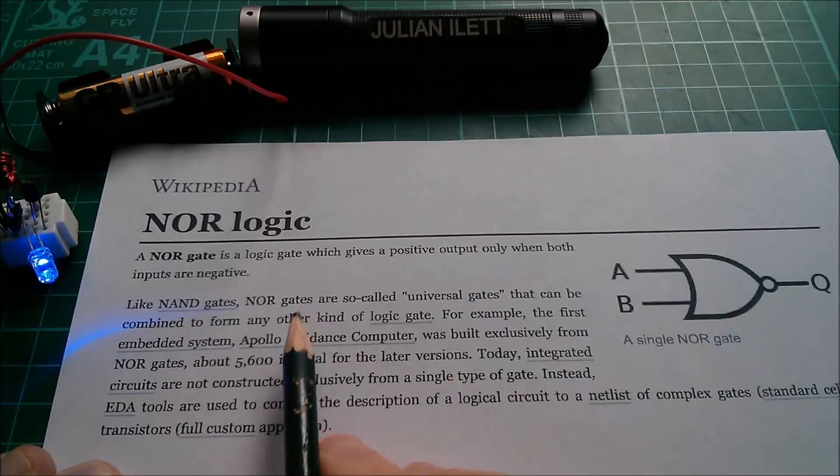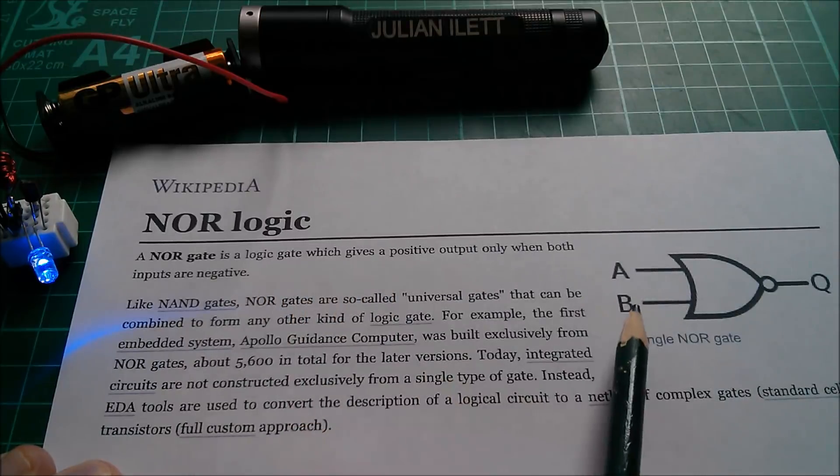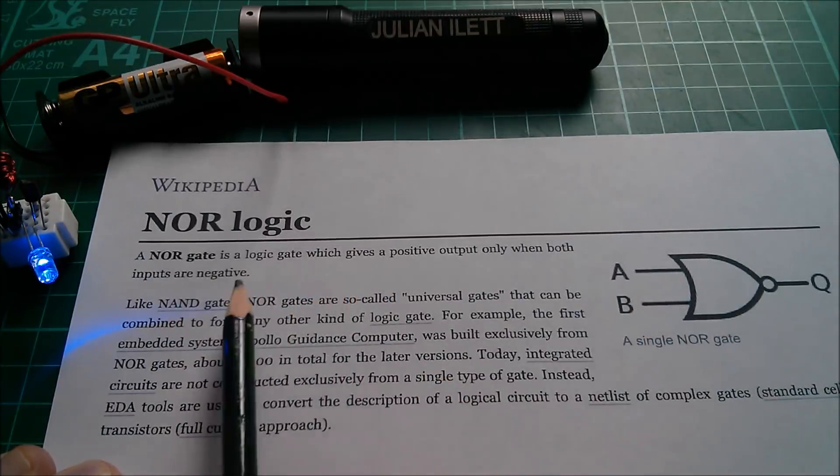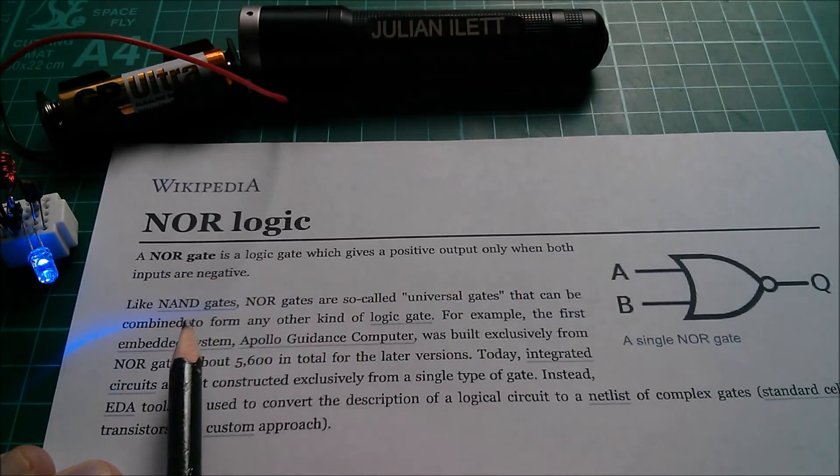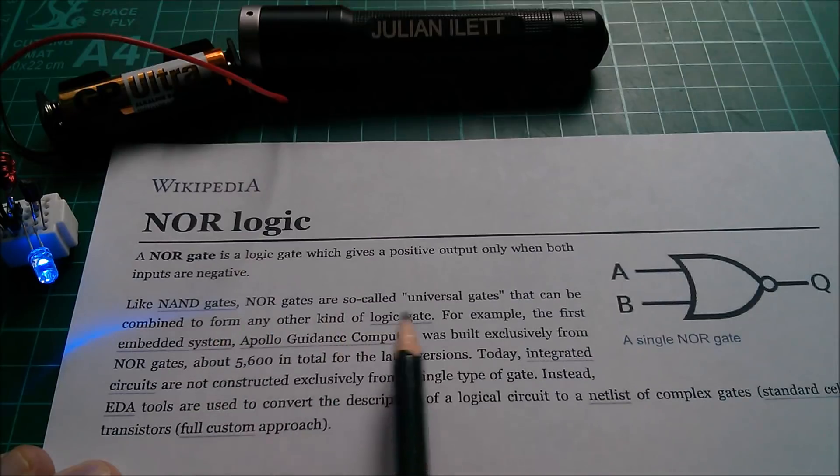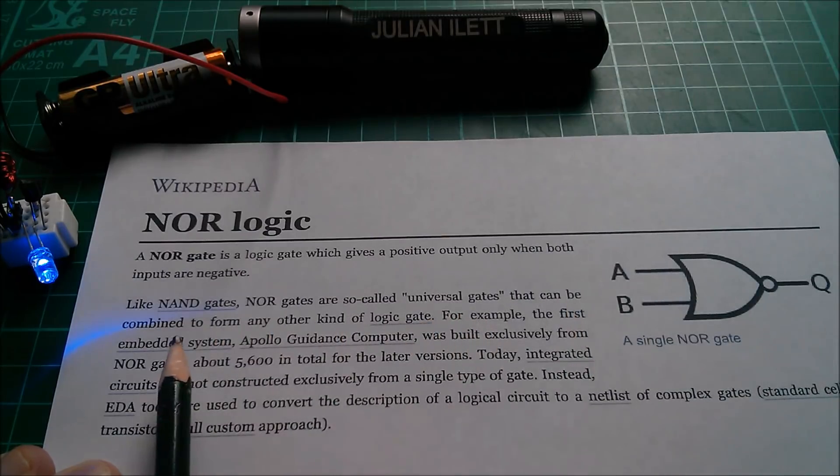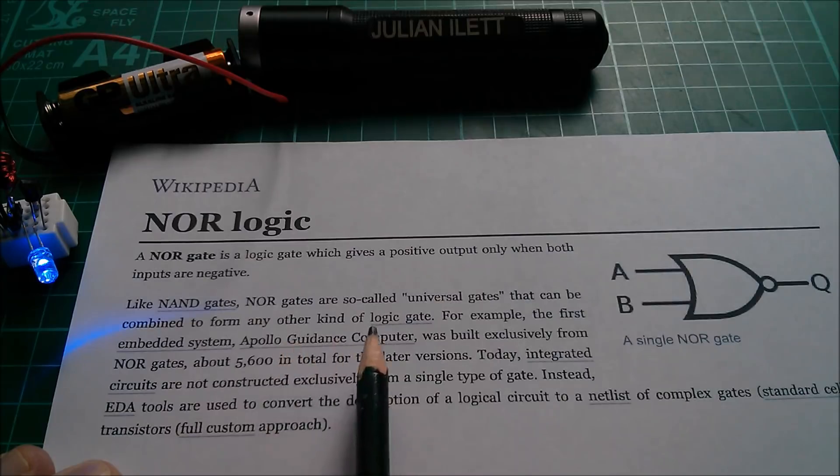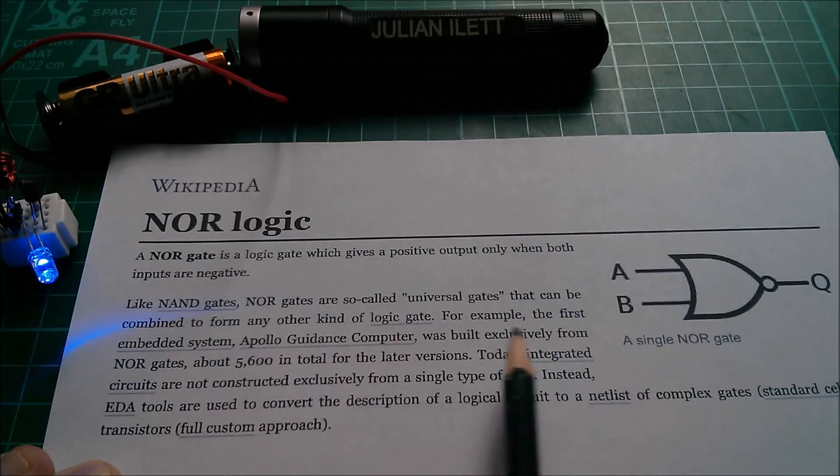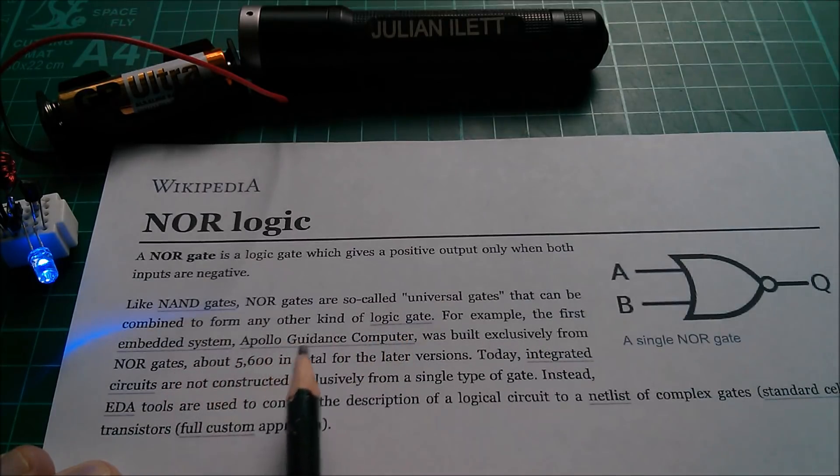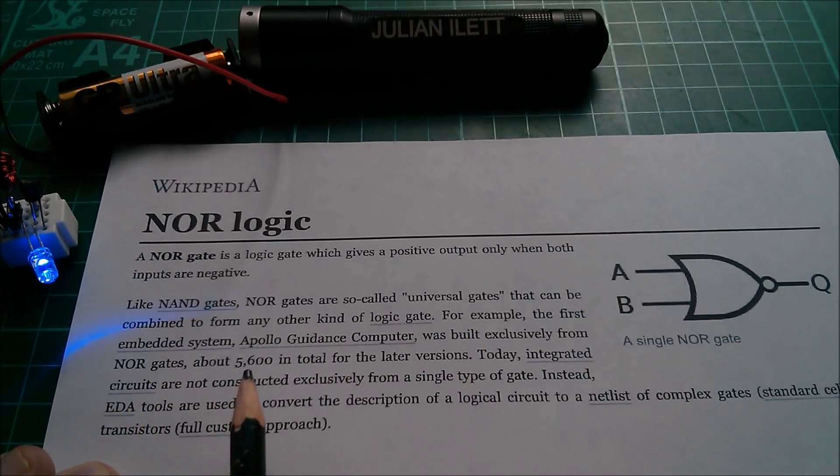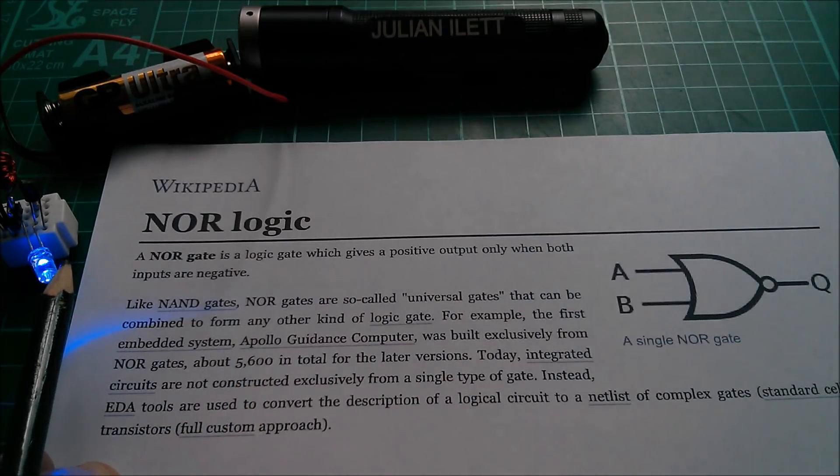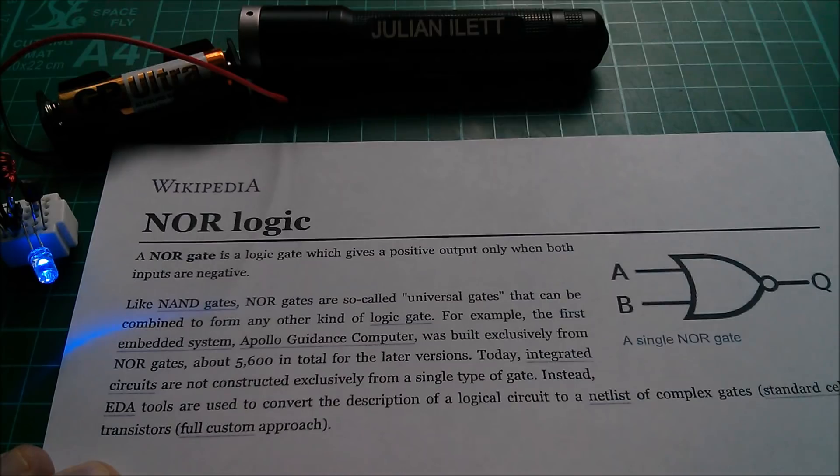As we can see here from NOR logic or the NOR gate on Wikipedia, a NOR gate is a logic gate which gives us a positive output only when both inputs are negative. Like NAND gates, NOR gates are so-called universal gates that can be combined to form any other kind of logic gate. For example, the first embedded system, Apollo guidance computer, was built exclusively from NOR gates, about 5600 of them. Joule thief computer anyone? Cheerio.